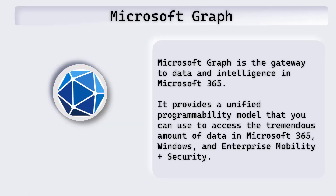Let's start with the first slide, which is about Microsoft Graph. I'm sure everyone knows about Microsoft Graph. I've just taken these two sentences from docs.microsoft.com: Microsoft Graph is the gateway to data and intelligence in Microsoft 365, and it provides a programmability model that we can use to access a tremendous amount of data in Microsoft 365, Windows, and enterprise mobility and security. In today's demo, we'll be focusing on getting Microsoft 365 data using Microsoft Graph.